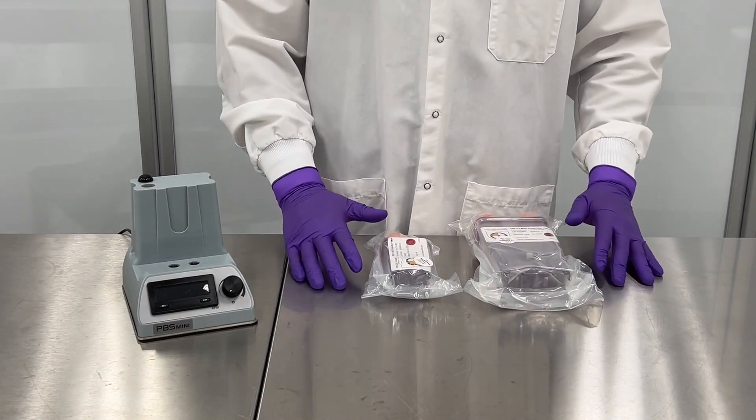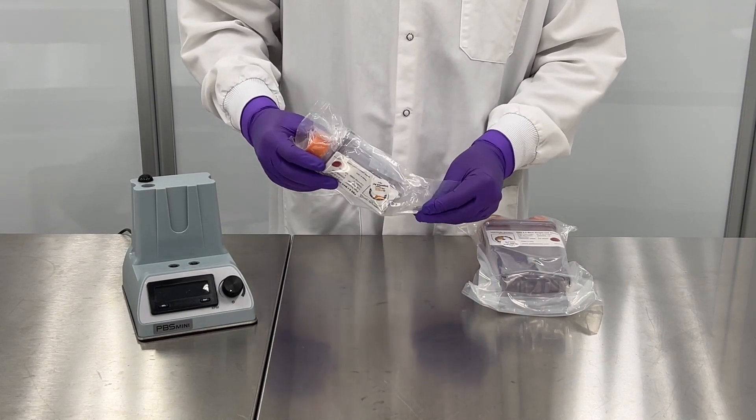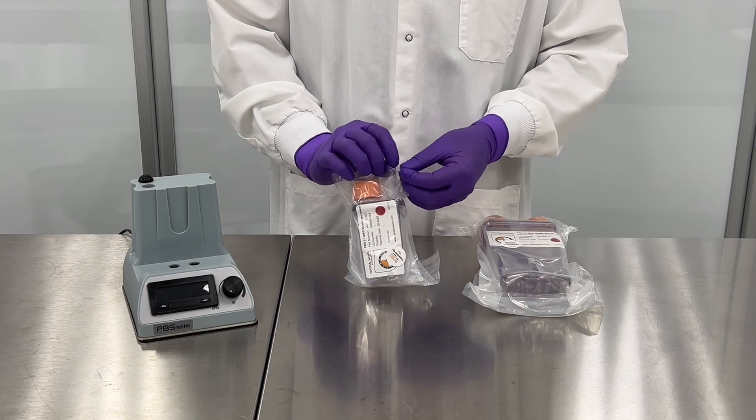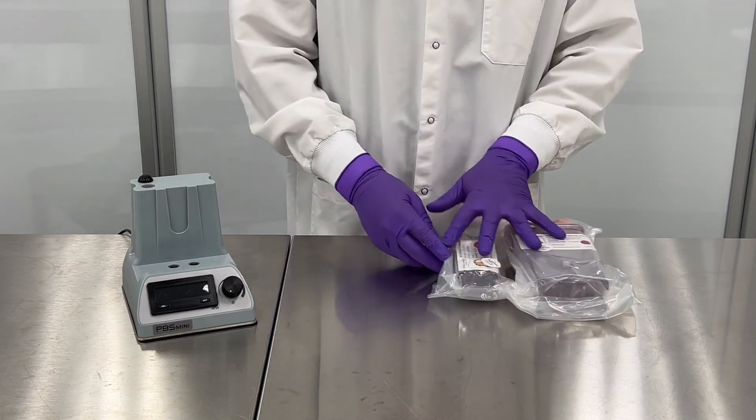Here we have some samples of our 0.1 and 0.5 vessels. You can see they come pre-gamma sterilized and they're double bagged. To open these you would just grab a hold up top here at the pre-cut, pull it out, and then that would allow you open this without any scissors or any sharp elements.